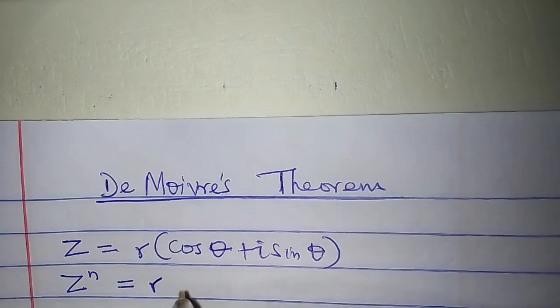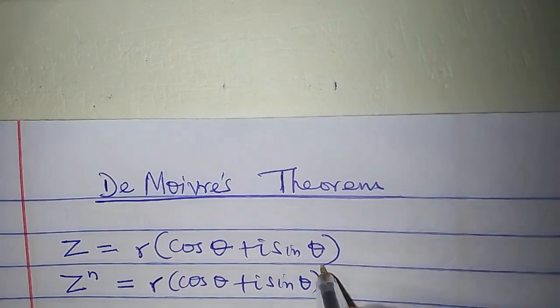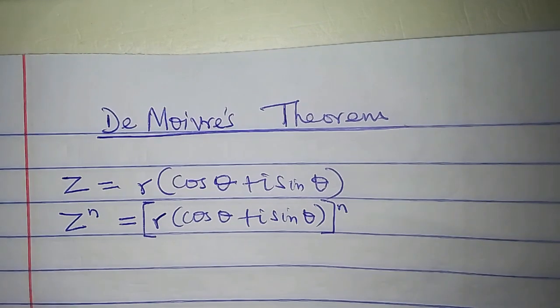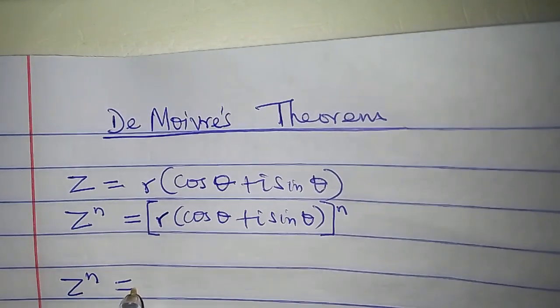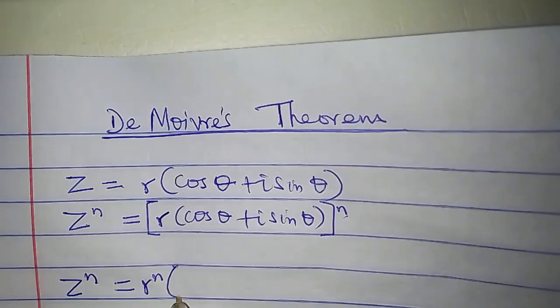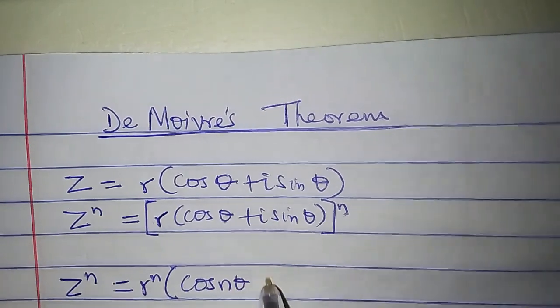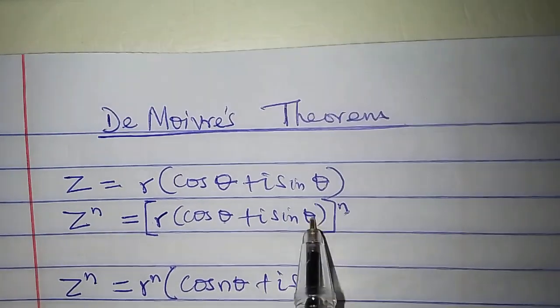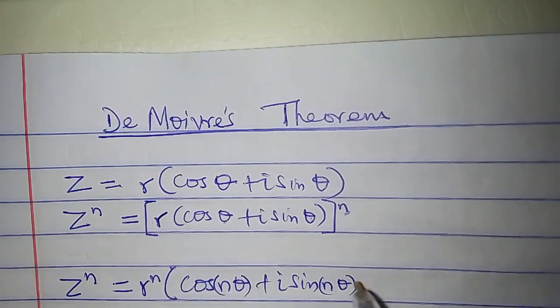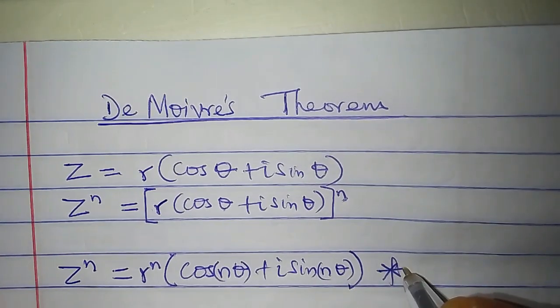which is equal to r cos theta plus i sine theta all to the n, then De Moivre's theorem states that z to the n is equal to r to the n times, in brackets, cos n times theta plus i sine n times theta. This is De Moivre's theorem.